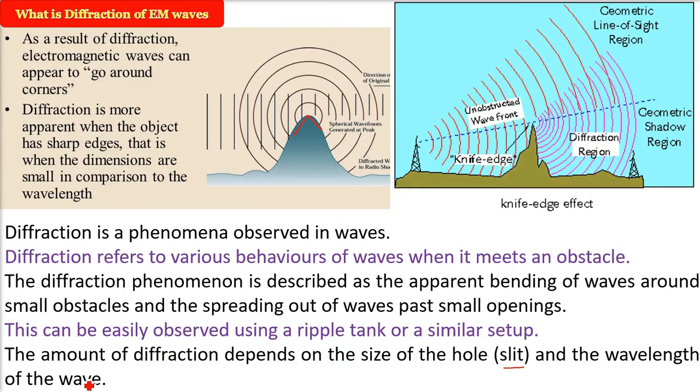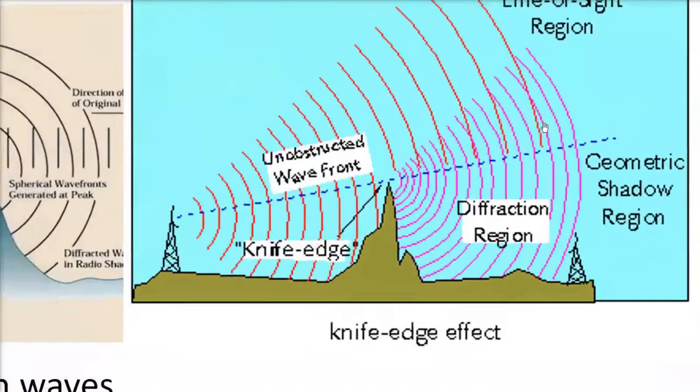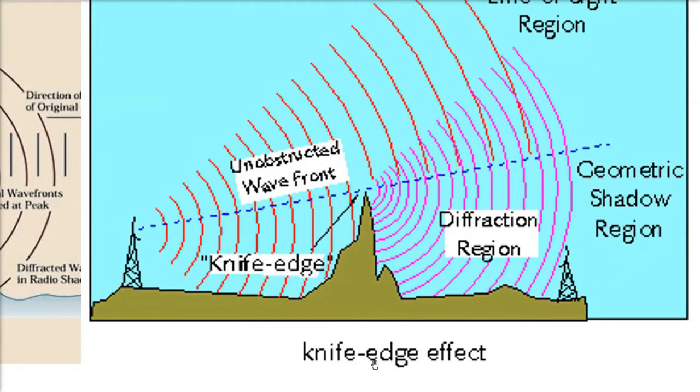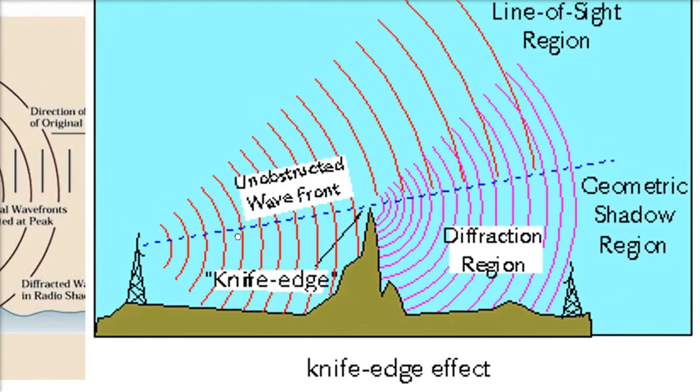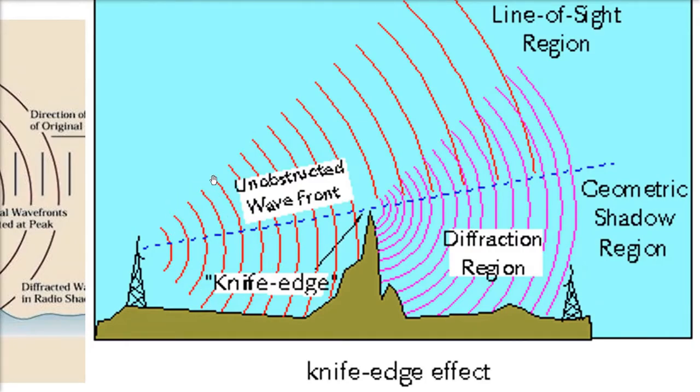Now I will show you the actual algorithm which we use in diffraction: double knife edge and knife edge. So you see here, this is the wavefront which is the unobstructed wavefront. Now we have here a region or a mountain with a very sharp knife edge. That is very sharp edge. We call it as a knife edge.